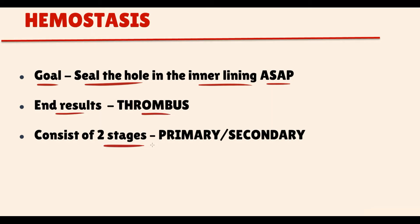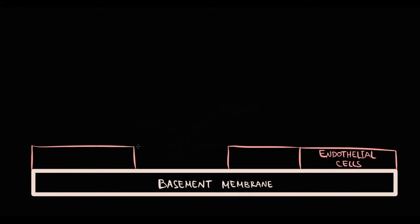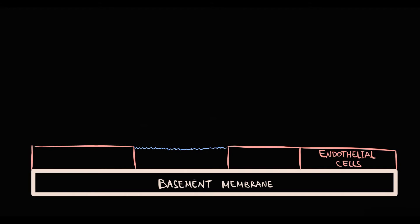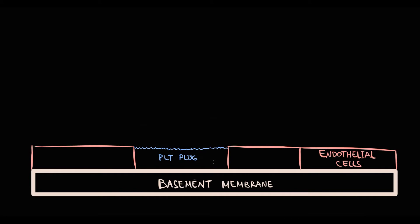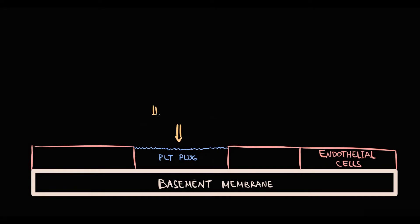Hemostasis can be divided into two distinct stages: primary and secondary. Once damage to the inner lining occurs, the goal is to immediately seal the hole. Platelets immediately interact with the blood vessel wall, resulting in formation of a platelet plug. Because the coagulation system makes the platelet plug as fast as possible, it is still weak and rough around the edges. Secondary hemostasis is therefore needed to stabilize it and transform the weak platelet plug into a formidable thrombus.